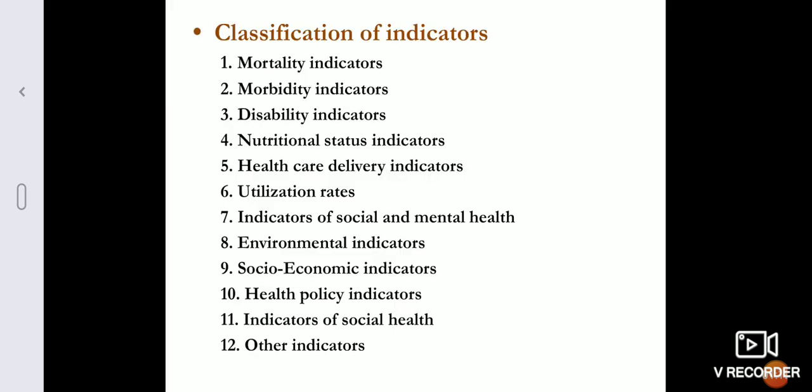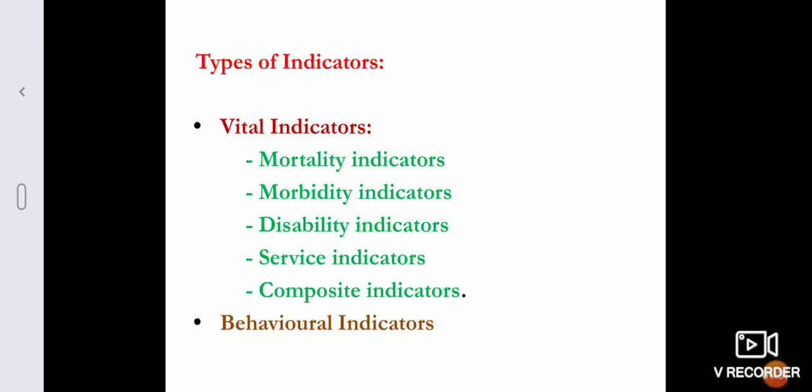The classification of indicators includes mortality, morbidity, disability, nutritional status, health care delivery, utilization, social and mental health, environmental indicators, socio-economic, health policy, social health indicators, and others. They can also be written as vital indicators and behavioral indicators. Vital indicators include mortality, morbidity, disability, service indicators, and composite indicators, whereas the other category is behavioral indicators.